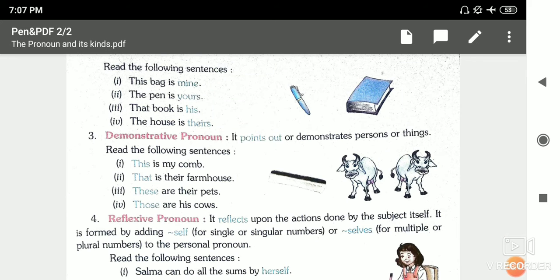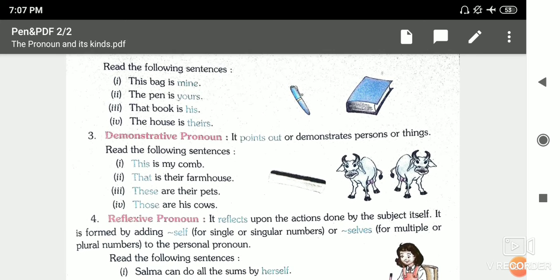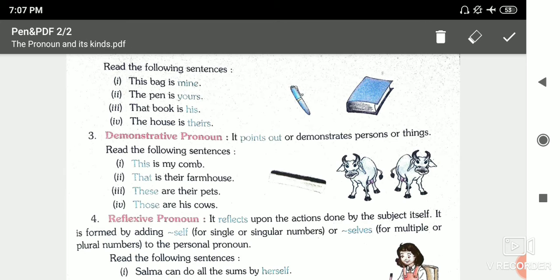For example, the pen is yours. We can say this is your pen, or this pen is yours. So 'yours' is possessive pronoun. Similarly, that book is his - not 'him', but 'his'. We can say it is his book, or just use 'his'.